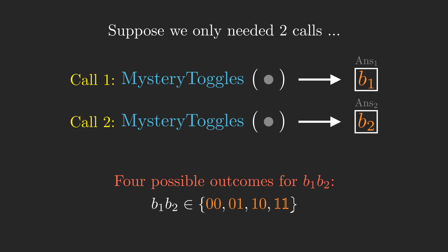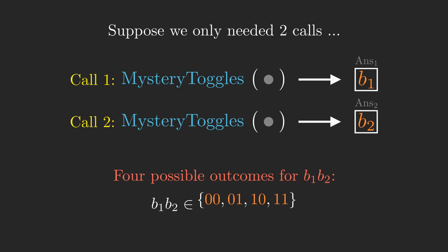There are four possibilities for what those two bits could be: 00, 01, 10, and 11. But there are eight possibilities for mystery toggles.